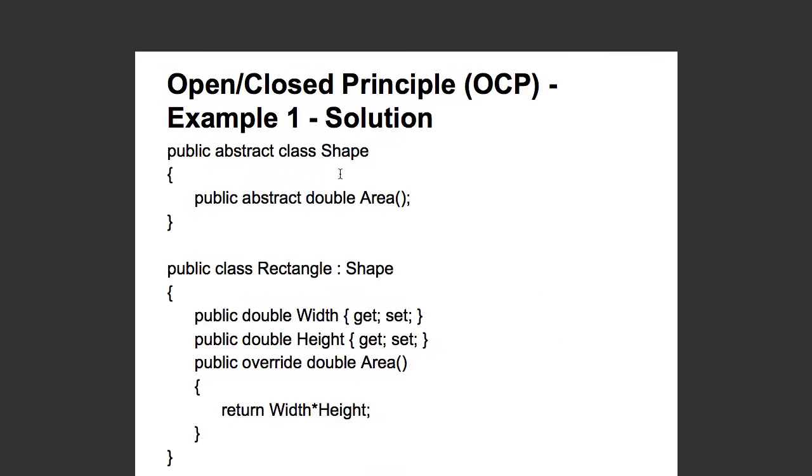Now, what would be a better solution? A better solution would be allowing each of the shapes to define their own area methods. So, here we are creating an abstract class called shape. This could also be an interface and we are creating an area method inside the rectangle class implementing the abstract method.